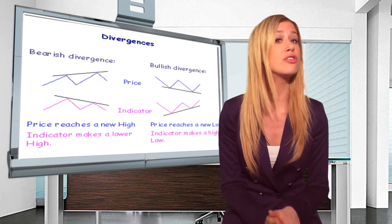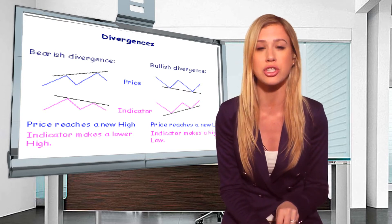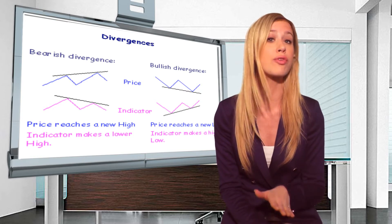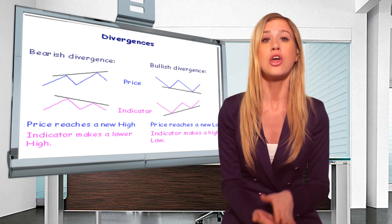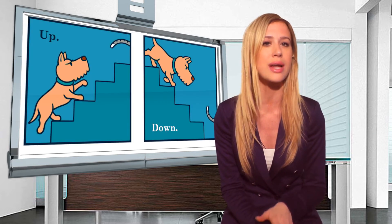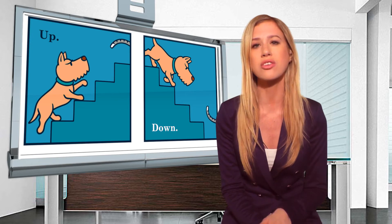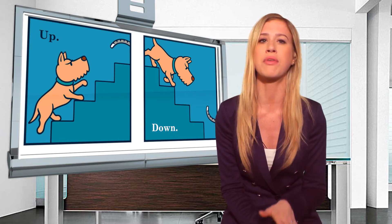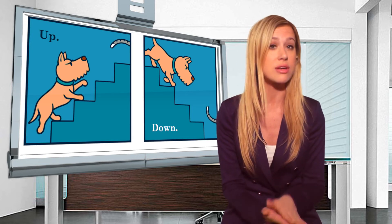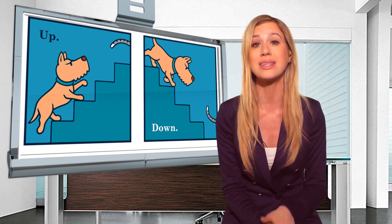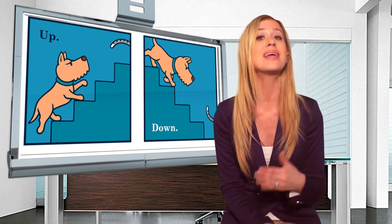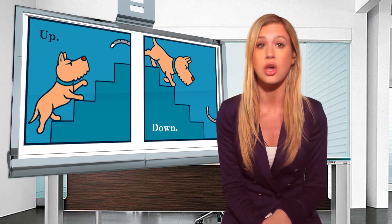They may do so by terminating current positions on securities or searching for new opportunities to enter. Notice that divergence can be either positive or negative based on the signals of the major shifts in the direction of the price. Positive divergence occurs when the price of an asset declines to a new low price while the indicator starts to climb upwards.